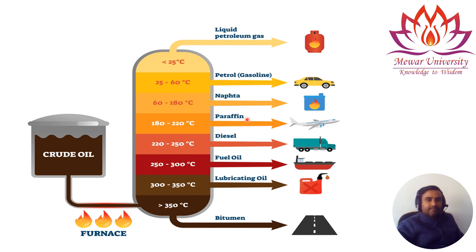The heavier component is paraffin, with a boiling point range of 180 to 220°C — used as aviation gas or kerosene fuel for aeroplanes. From 220 to 250°C, we obtain diesel, used mainly in heavy vehicles. Above 250 to 300°C, we have fuel oil, used in ships. From 300 to 350°C, we obtain lubricating oil, used to lubricate engines of heavy vehicles and cars.